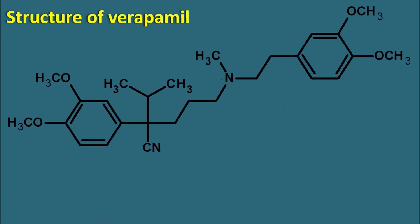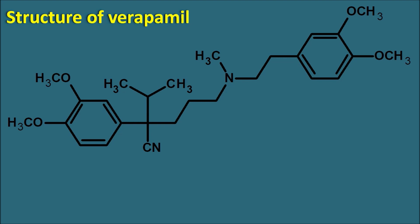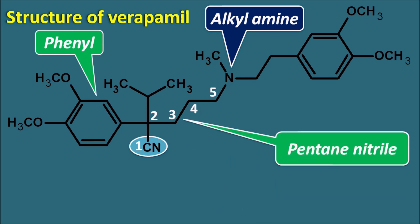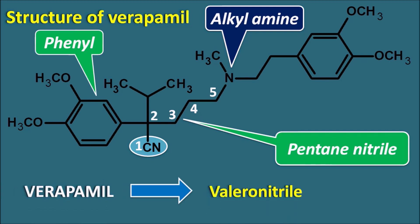Let us see the structure of verapamil. This large structure shows a phenyl ring attached with an alkyl chain along with an amine group, and another phenyl group attached with an alkyl amine side chain — that's why verapamil is a phenylalkylamine. One functional group observable here is a cyanide, also called nitrile. Starting numbering from this nitrile — one, two, three, four, five — the nitrile is attached with a 5-carbon chain, meaning it has a pentanitrile side chain attached to the phenyl ring at the second position. That's why verapamil is considered a derivative of valeronitrile, which is a 5-carbon chain with a nitrile group at the first position.